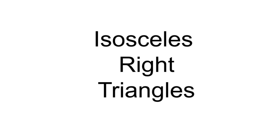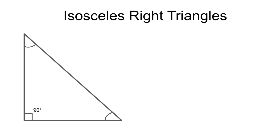Hi! Today we'll talk about isosceles right triangles. What we generally know about isosceles triangles is that they have two equal sides and two equal angles. Let's try to find them in this isosceles right triangle.